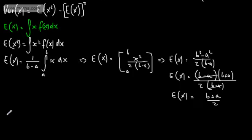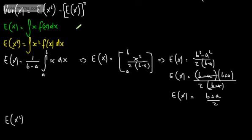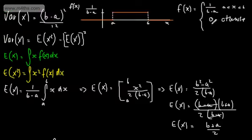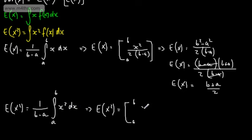Now let's look at E[X²]. Multiplying f(x) by x² and bringing the constant to the left of the integral sign, we have 1/(b minus a) times the integral from a to b of x² dx. Raising the power and dividing by the new power, we get x cubed over 3, evaluated from a to b, over (b minus a).